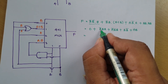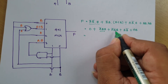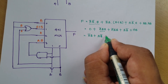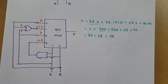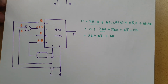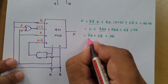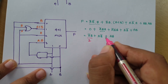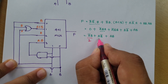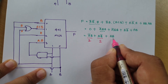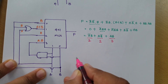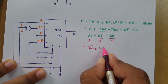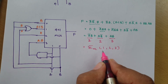Further simplification gives F = Ā·B + A·B̄ + A·B. Now identifying the minterms: Ā·B corresponds to 01, which is minterm 1. A·B̄ corresponds to 10, which is minterm 2. A·B corresponds to 11, which is minterm 3. So in terms of minterms, the answer is F = Σm(1, 2, 3).